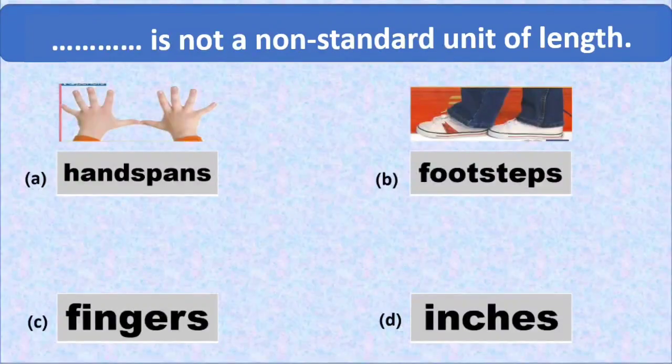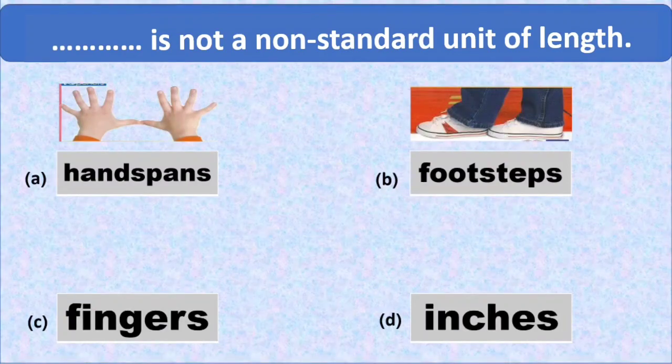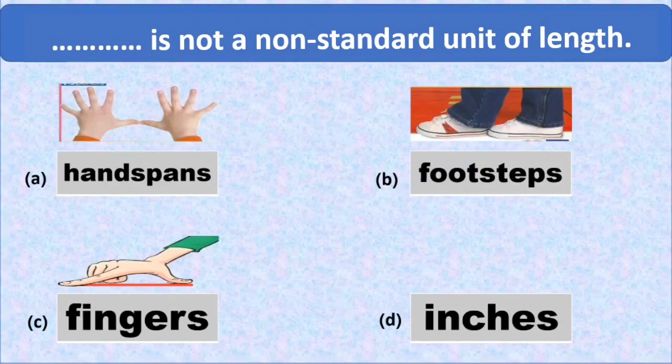Next one is footsteps. Footsteps are also not same as others' footsteps, so it is also a non-standard unit. Third is fingers. Our fingers are not always equal to length of others, so it is also a non-standard unit of length.